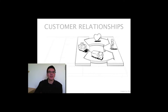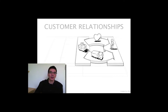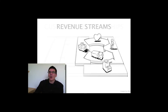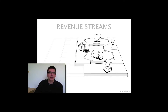Steve Blank uses customer relationships to describe how you get, keep, and grow customers — you need to acquire them first, then figure out how to keep them, and grow if you don't have enough. The next question is what people or companies are really willing to pay for, and how they want to pay — subscription, licensing fee — and through which pricing mechanisms. Google, for instance, auctions off search terms for advertising rather than just selling them, which makes them much richer.